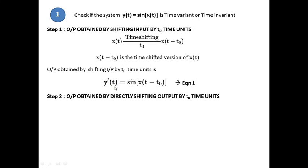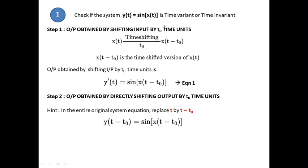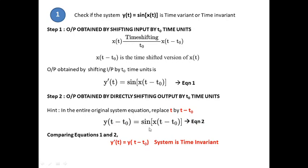Step two — obtain the output by directly shifting the output by t₀ time units. Here the hint is simple: in the entire equation, wherever you have t, replace it by t − t₀. So y(t) = sin(x(t)) becomes sin(x(t − t₀)). This is equation two. Comparing equations one and two, y-dash(t) equals y(t − t₀), hence the system is time invariant.